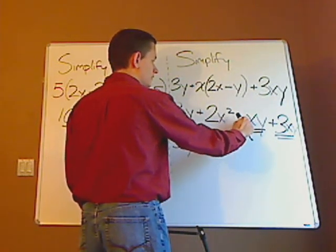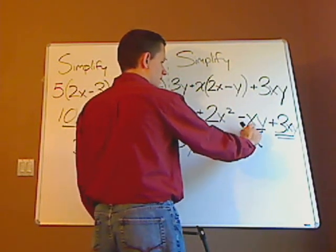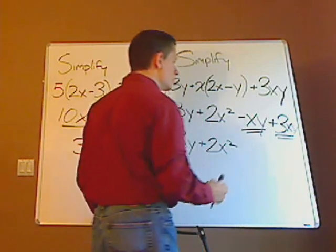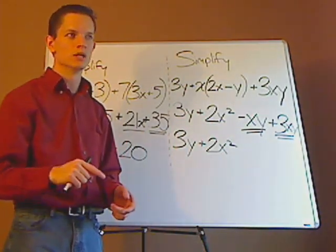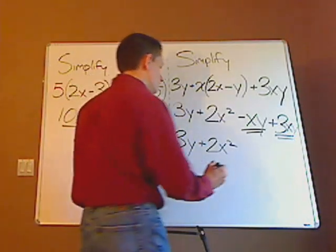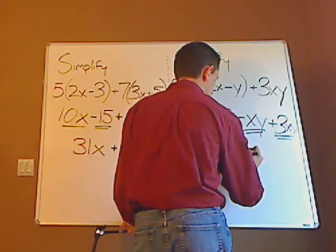Now it's implied that there's a 1 in front of the xy. So negative 1xy plus 3xy is going to give me 2xy.